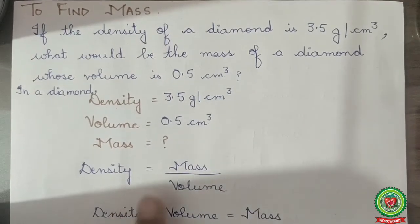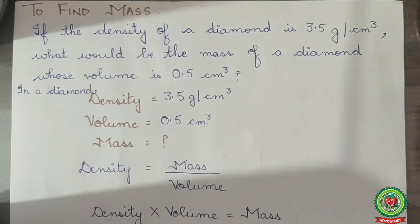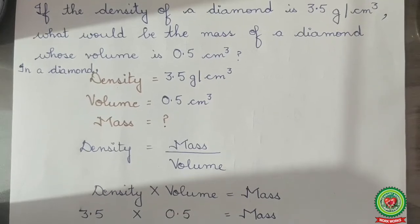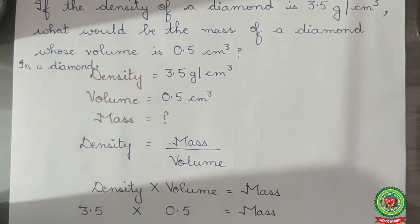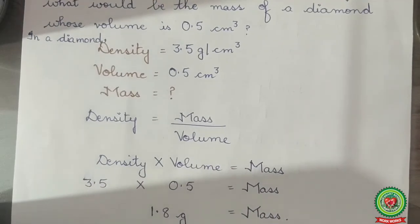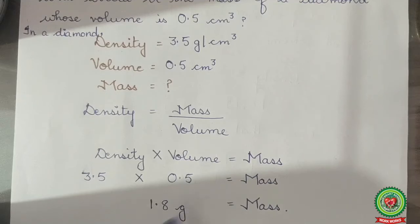We know density equals mass upon volume. From here we can find that mass equals density multiplied by volume. Putting the values, density is 3.5 and volume is 0.5. We multiply and get an answer for mass of 1.8 grams.